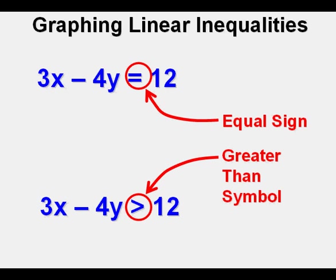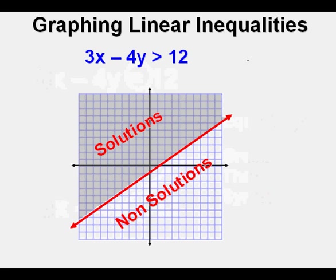In an equation, we are solving for a line, but in an inequality, we are solving for a boundary line, because the line we graph is a boundary. On one side of the line are the solutions, and on the other side there are no solutions. The shaded area above the line is the set of solutions, and the unshaded area below contains no solutions. Since the boundary line is solid, that line is also part of the solution set. We need to find the equation of the boundary line, draw a dashed or solid line, and shade on one side to represent the solution set.